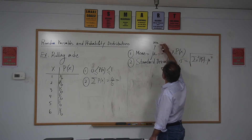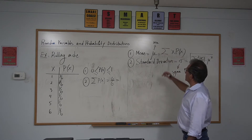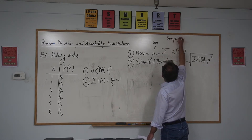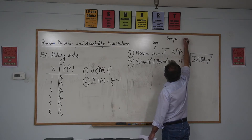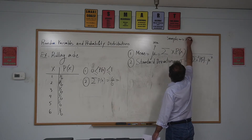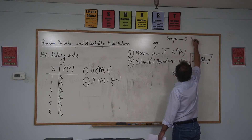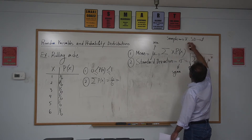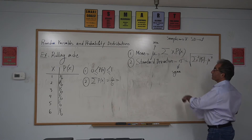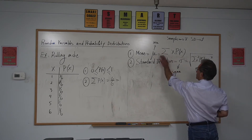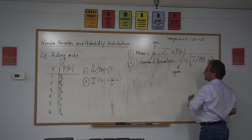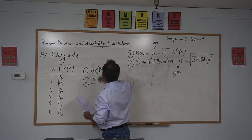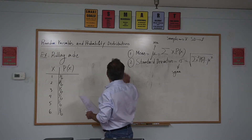Just to refresh your memories — remember, when we had sample data, we said the mean was x-bar and the standard deviation was s. That was the notation for the sample. But for population, we use mu and sigma. Now let's calculate those, and then I'll tell you how we can use these two.